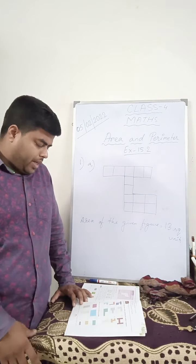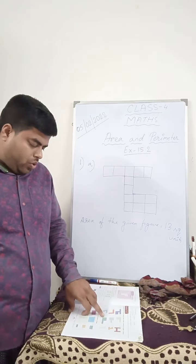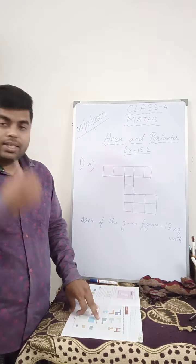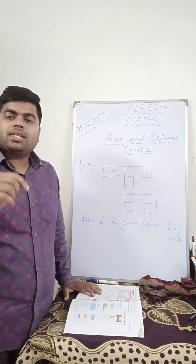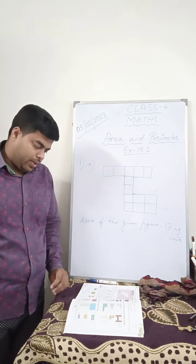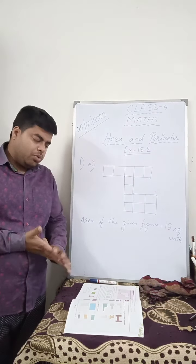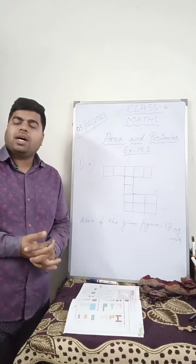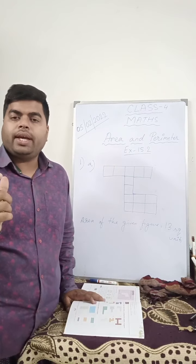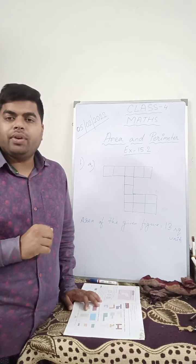So like for example, if you see F, F you have 1, 2, 3, 4... 16. So that will be your 16 square units. So this is how you find area of the given figure.